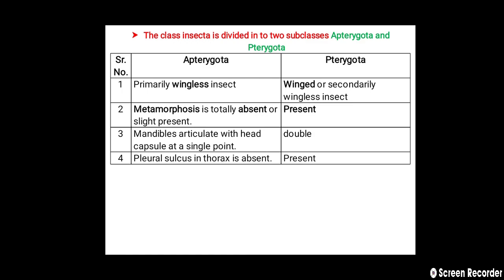Class Insecta or Hexapoda is divided into two subclasses: Apterygota and Pterygota. Apterygota are primarily wingless insects; Pterygota are winged or secondarily wingless. Metamorphosis is absent or slight in Apterygota but present in Pterygota. Mandibles articulate with the head capsule at a single point in Apterygota; in Pterygota mandibles are dicondylic. The pleural sulcus of the thorax is absent in Apterygota but present in Pterygota.